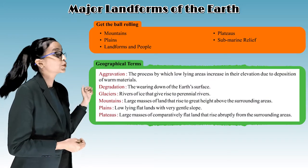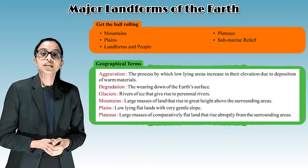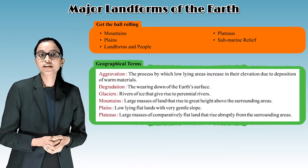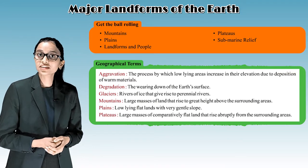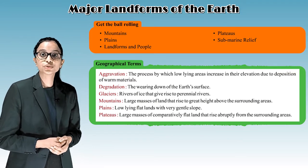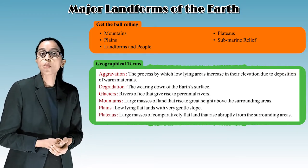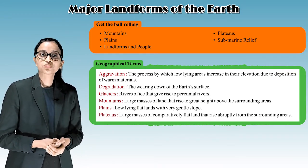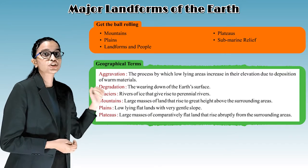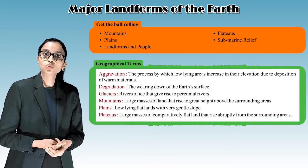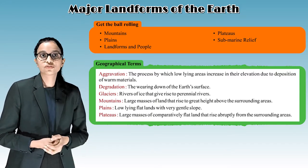Aggradation: the process by which low-lying areas increase in their elevation due to deposition of worn materials. Degradation: the wearing down of the earth's surface.